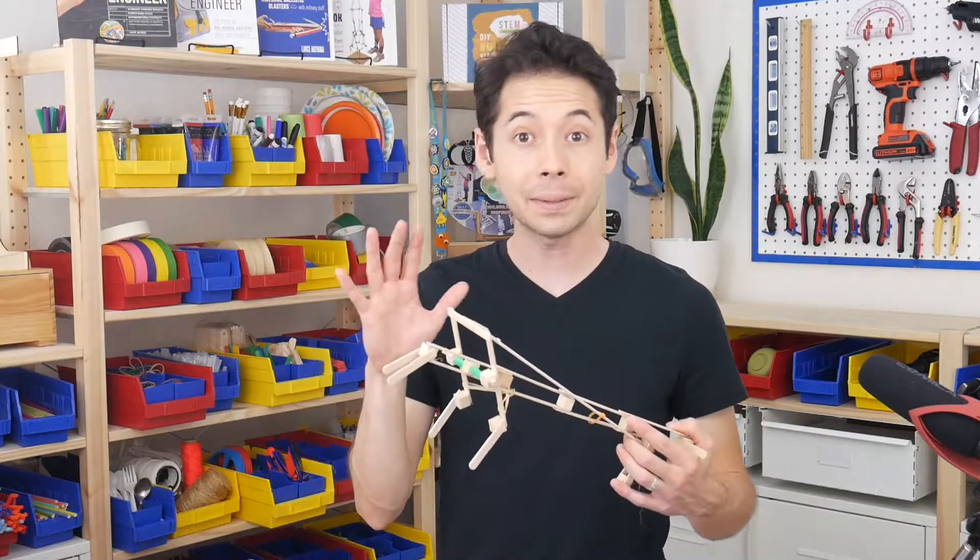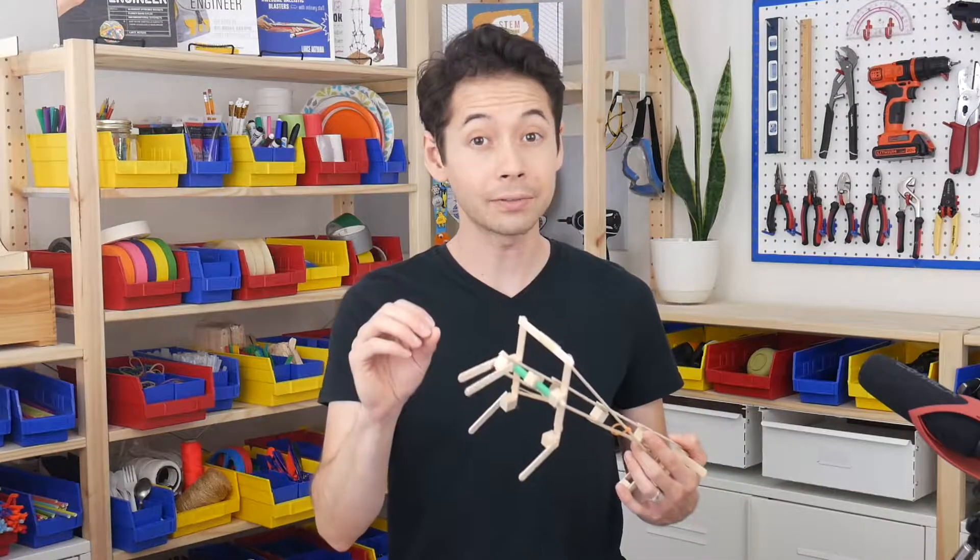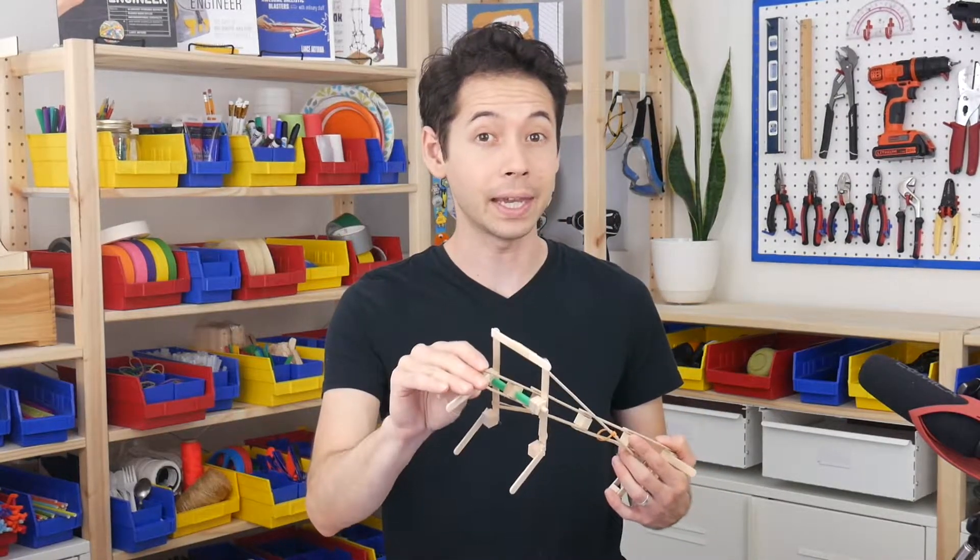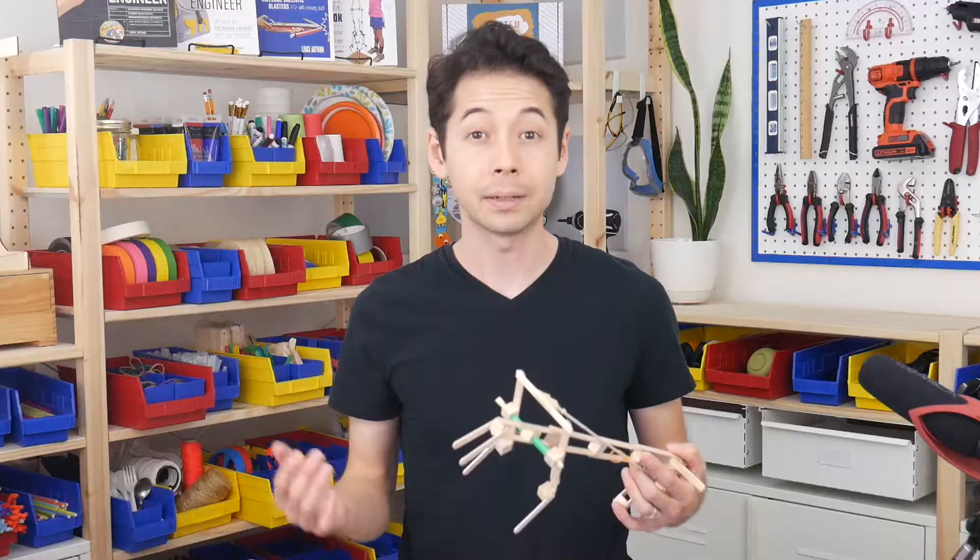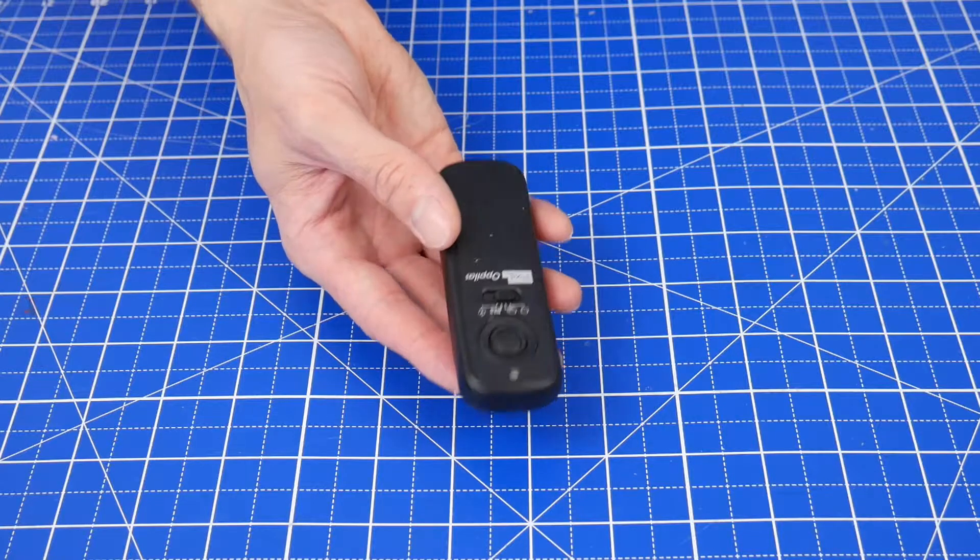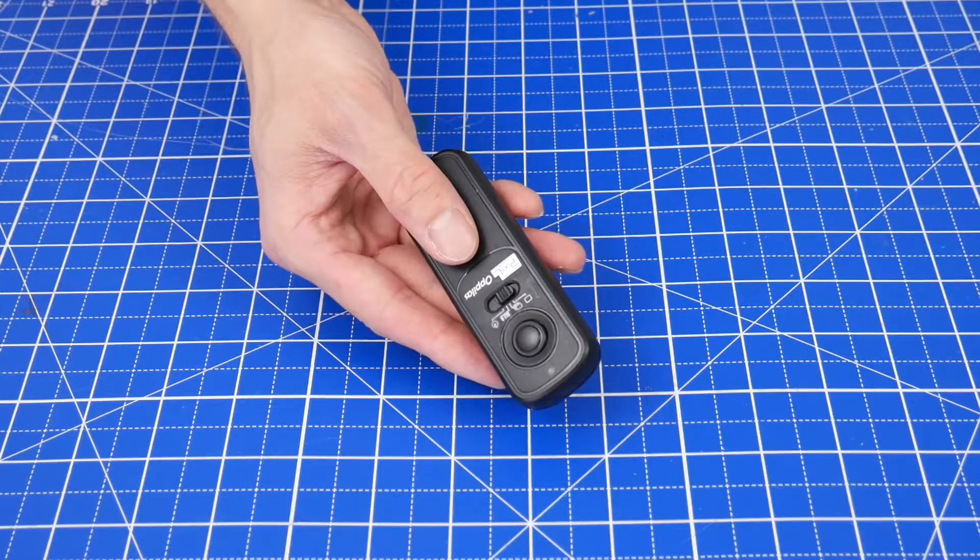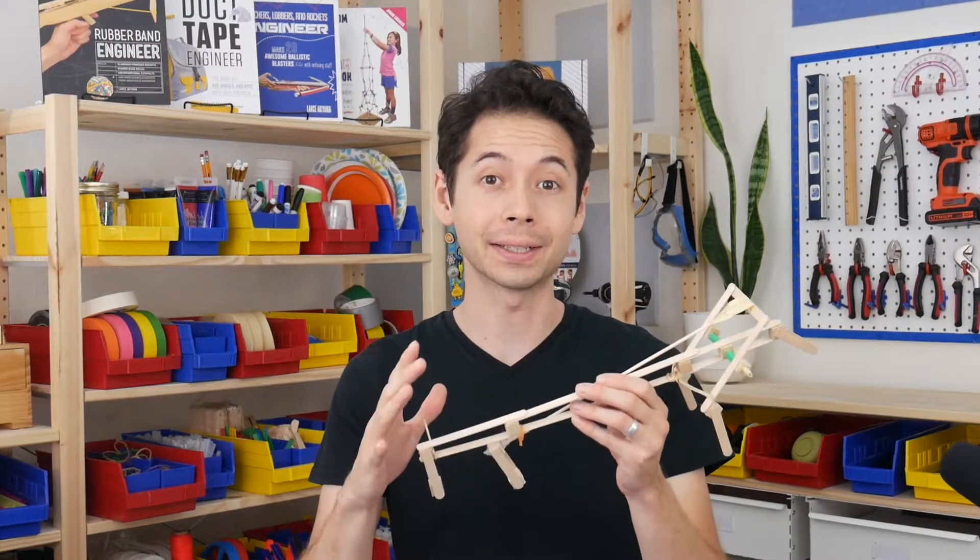Okay, so that's the basic example, and this can pick up some things. But there's still a lot of room for you to customize the shape of the hand so that it can pick up even more things. For example, this can pick up a paper cup, but it really struggles to pick up a roll of tape, this camera remote, and lots of other stuff. So there are three things that you can customize to improve your mechanical hand.